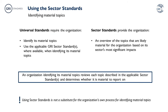The Exposure Draft of the Universal Standards states that an organisation reporting in accordance with the GRI Standards is required to identify its material topics and use the Sector Standard that applies to its sector, where available, when identifying these material topics. This means that an organisation needs to review each topic described in the applicable Sector Standard and determine whether the topic is material to report on.